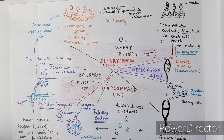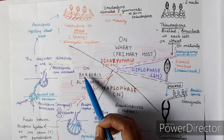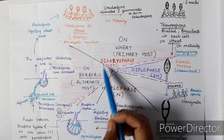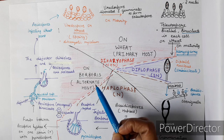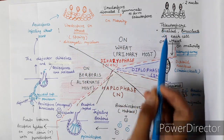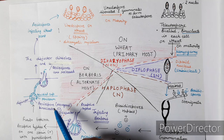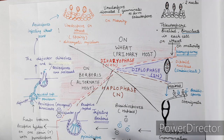It is called heterocious because it completes its life cycle in two hosts. Its primary host is wheat and its alternate host is Berberis vulgaris. It is called macrocyclic because it produces five different types of spores: uredospores, teleutospores, basidiospores, pycnidiospores, and aeciospores.